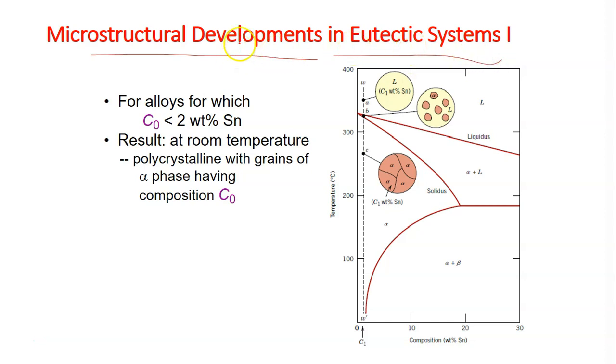eutectic system. Previously, we looked at the development of microstructure in the isomorphous binary system. We're going to use this lead and tin eutectic system.